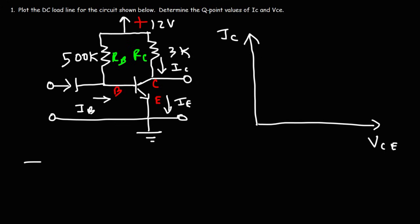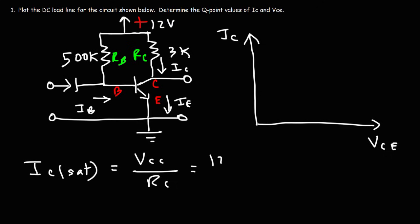The first thing you want to do is calculate the maximum saturation current. For this particular circuit, it is the collector supply voltage divided by RC. The collector supply voltage is 12V, RC is 3K, so 12V divided by 3K equals 4mA.